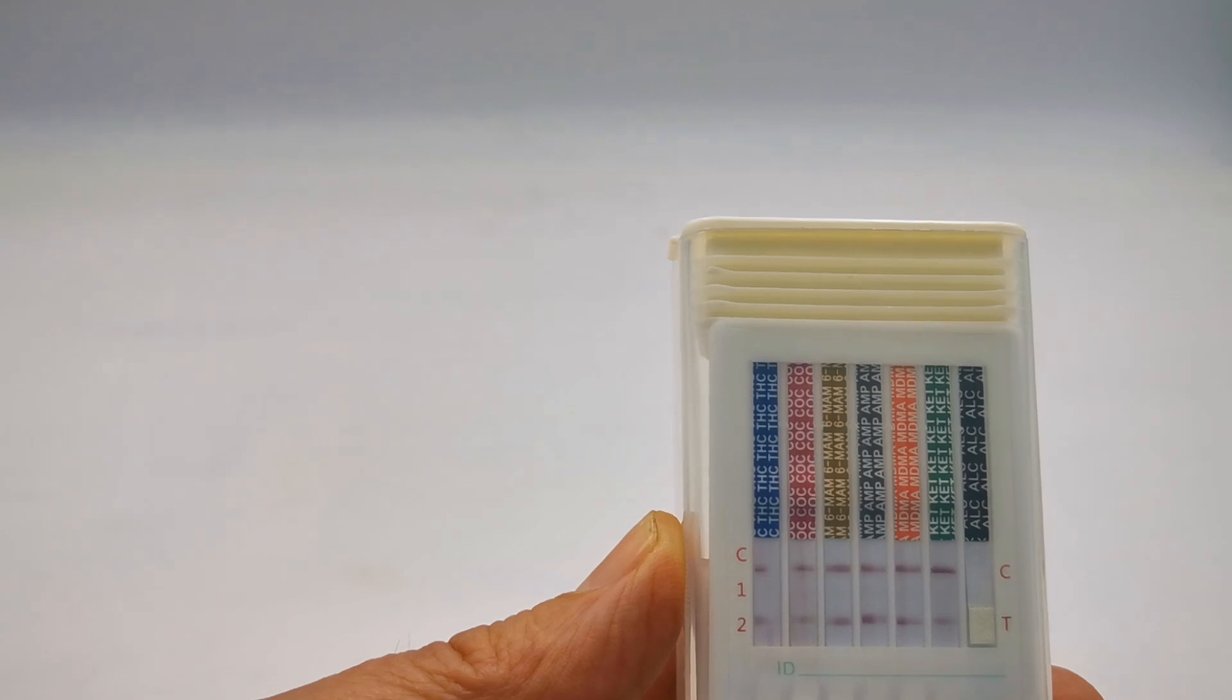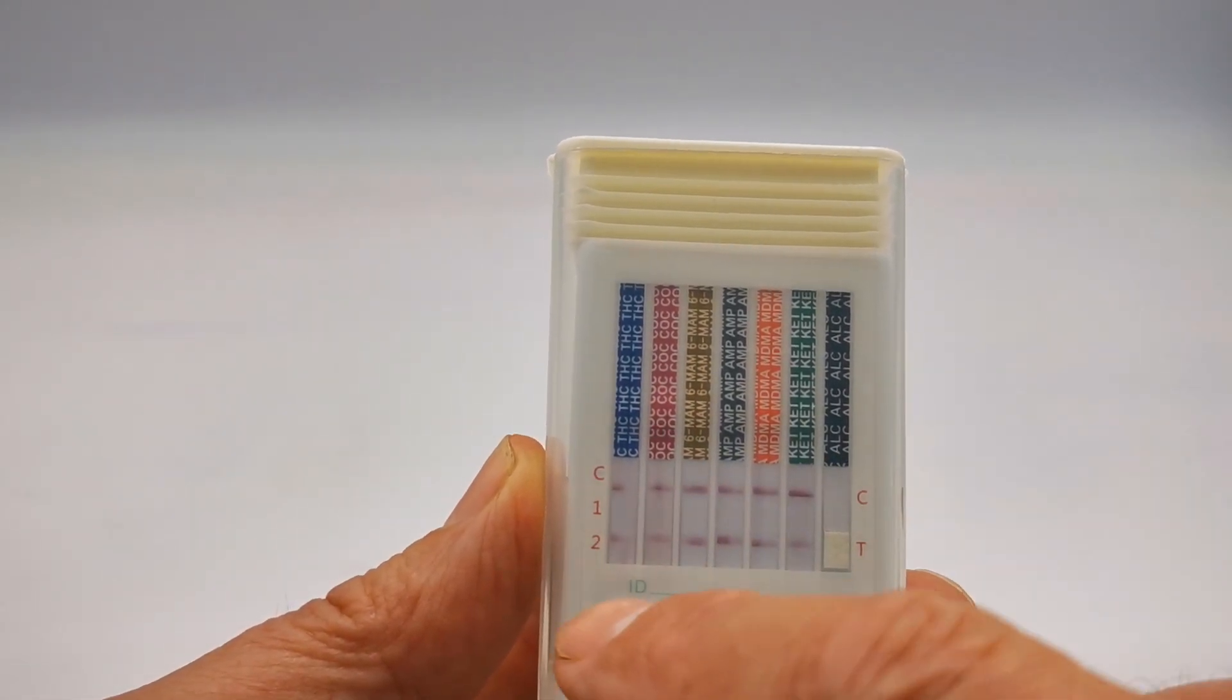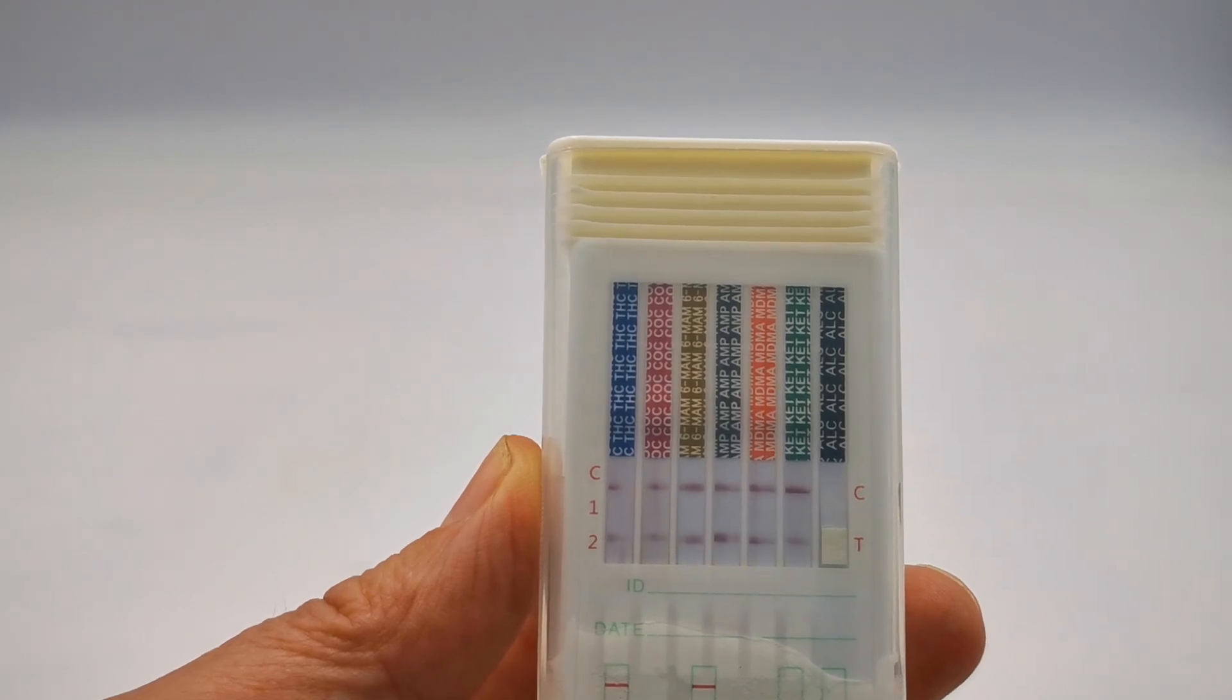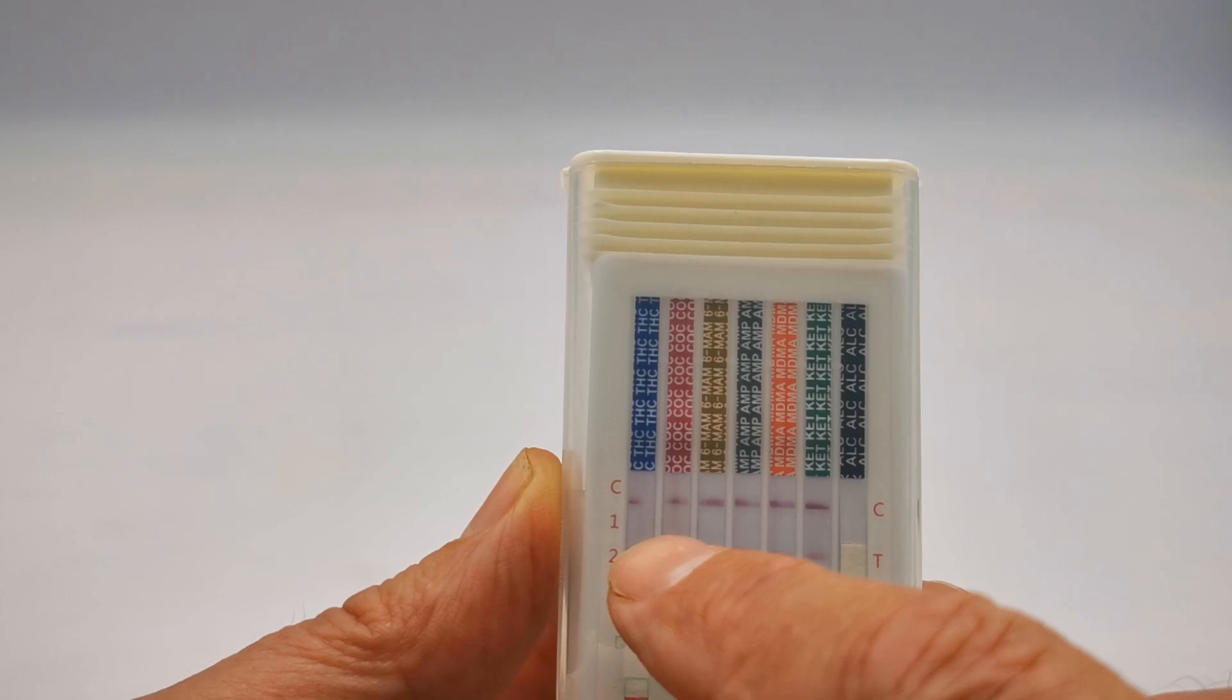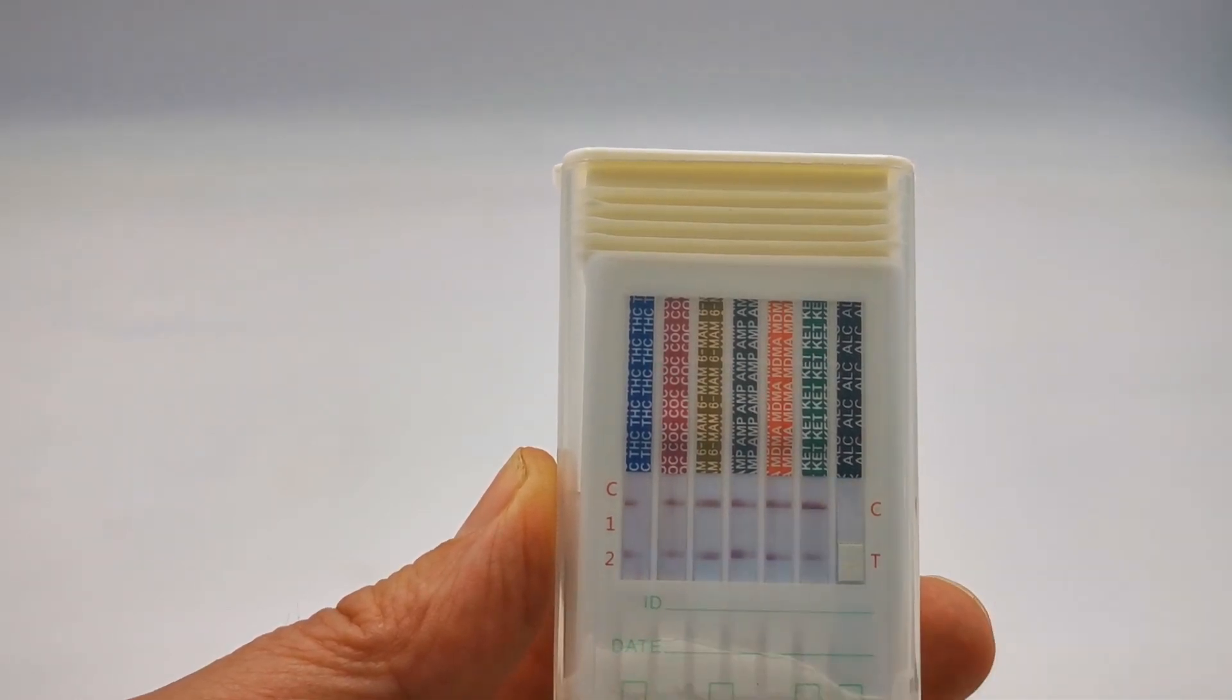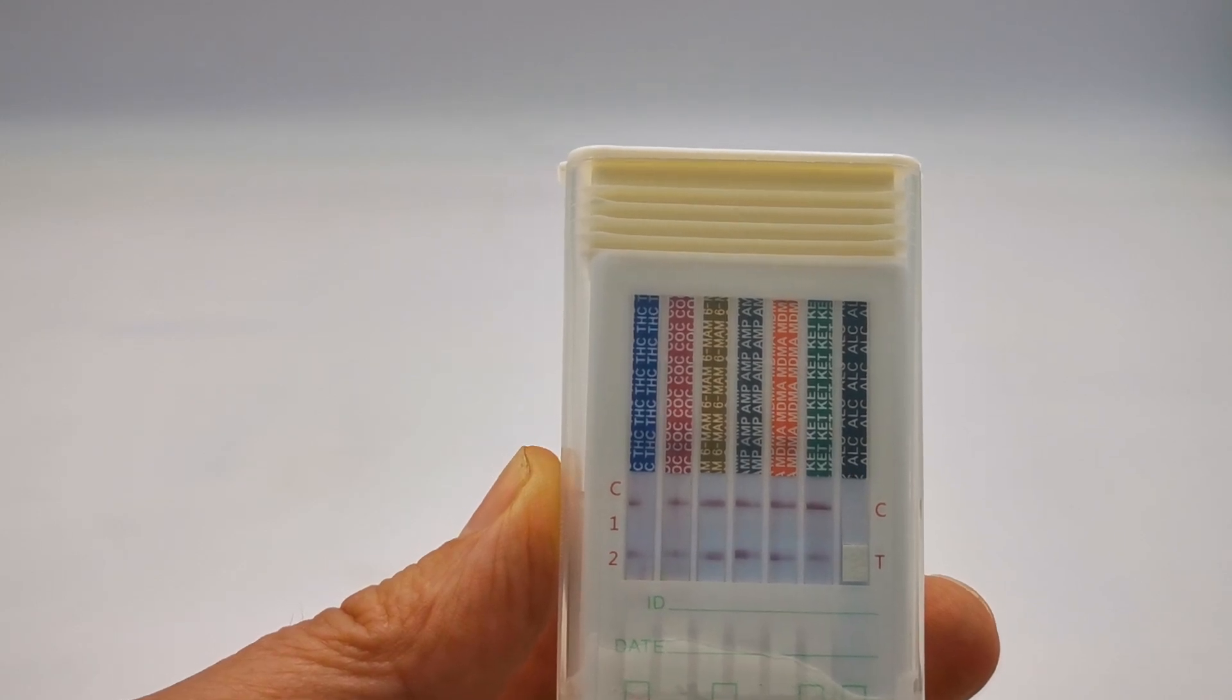All six of the drug tests have got nice control lines across them and all six have got test lines indicating negative results. If we had a positive result, we would have a control line but the complete absence of a test line showing at eight minutes.